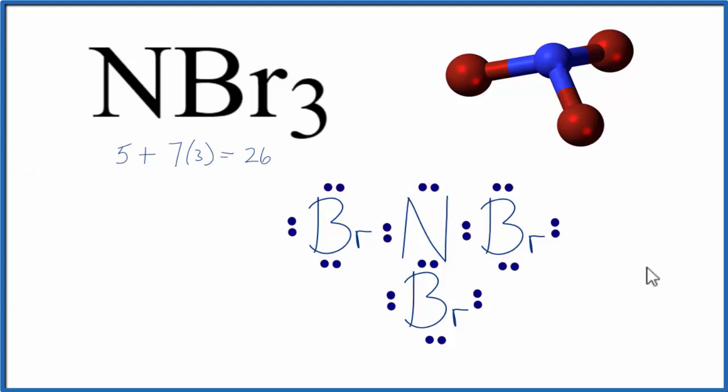And we're done. This is the Lewis structure for NBr3, nitrogen tri-bromide. This is Dr. B, and thanks for watching.